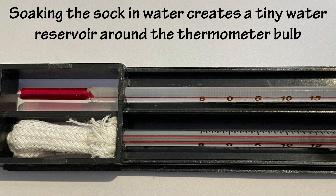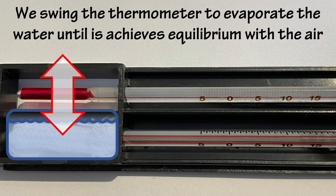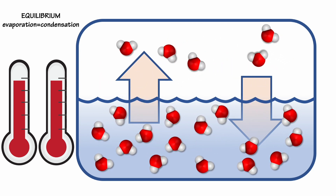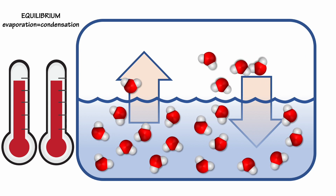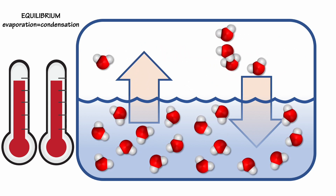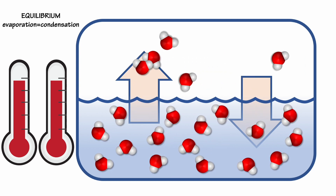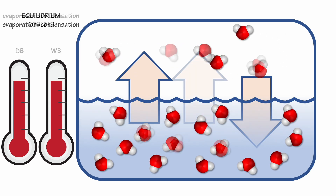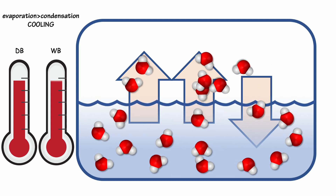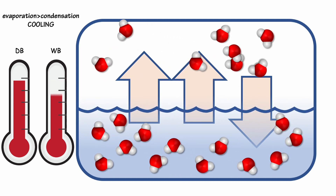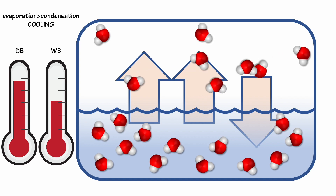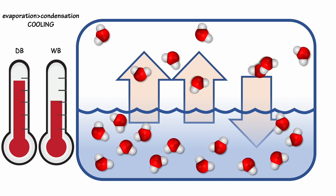Let's take a closer look at the sling psychrometer, and particularly what's happening with the wet bulb thermometer. The little sock holds a small reservoir of water around the thermometer bulb. When liquid water is in equilibrium with water vapor in the air, there's movement back and forth between the liquid and the vapor, and those rates of evaporation and condensation are exactly equal. These molecules are always in motion, and their motion and vibration reflect their kinetic energy. If the system is not in equilibrium, there's a net transfer of liquid to vapor by evaporation or vapor to liquid by condensation. After dunking the wet bulb in water, it's soaking wet and way out of equilibrium with the surrounding air, so evaporation exceeds condensation.